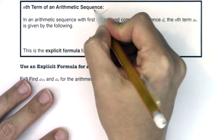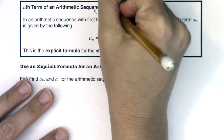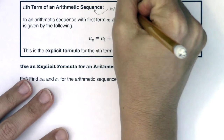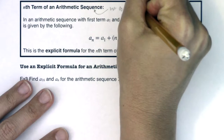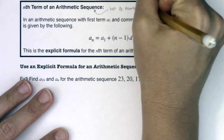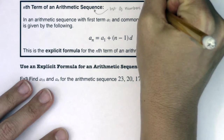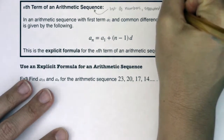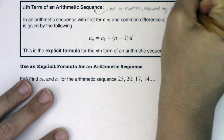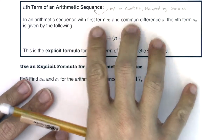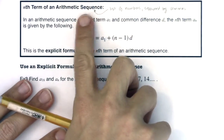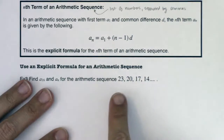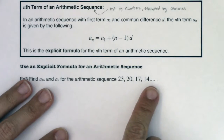Anytime you hear the word sequence, I want you to think list of numbers — specifically separated by commas. I mention this because eventually we're going to have the word series, and that's when we're going to be adding the numbers in the sequence.